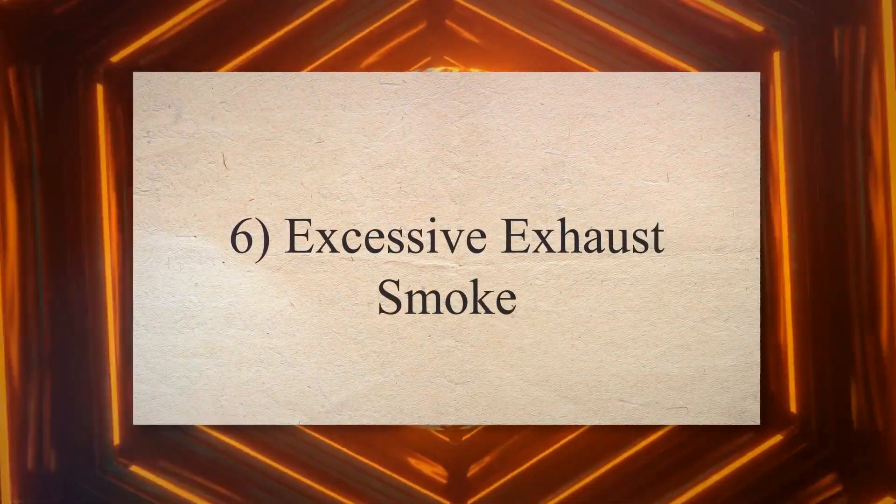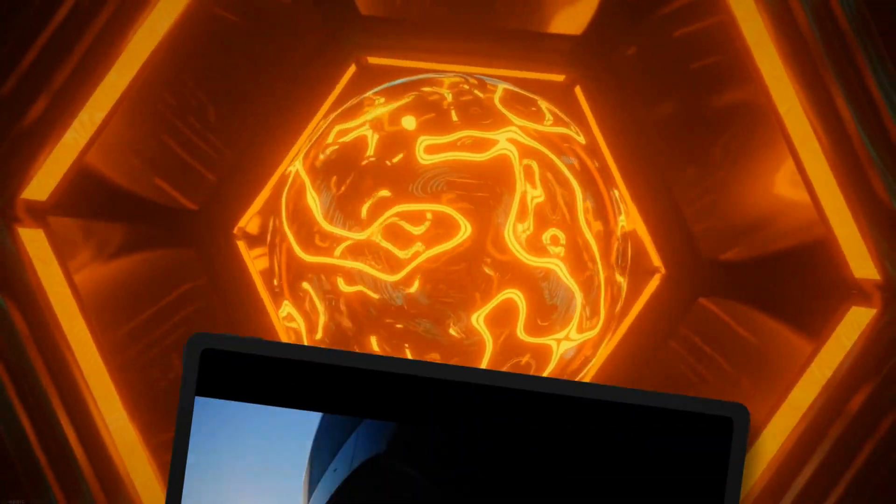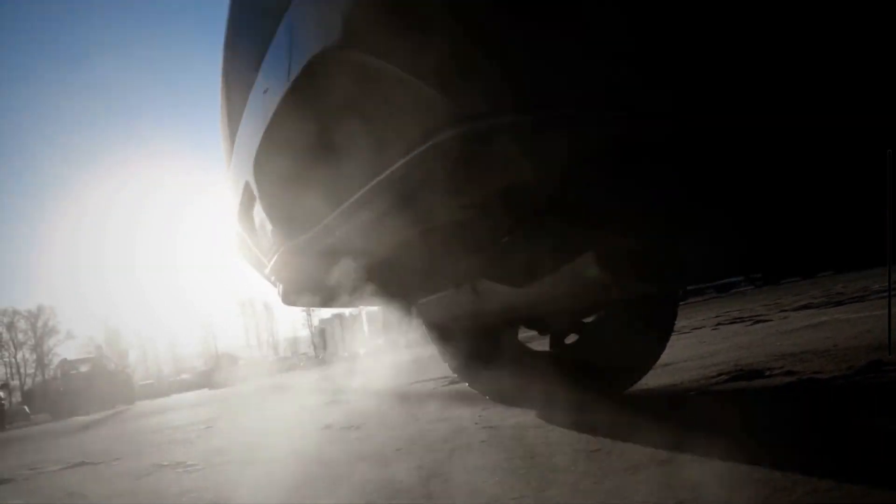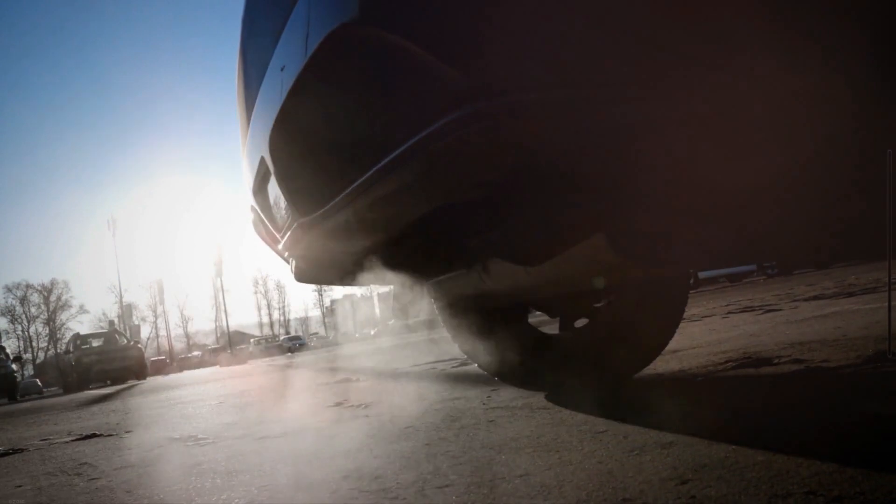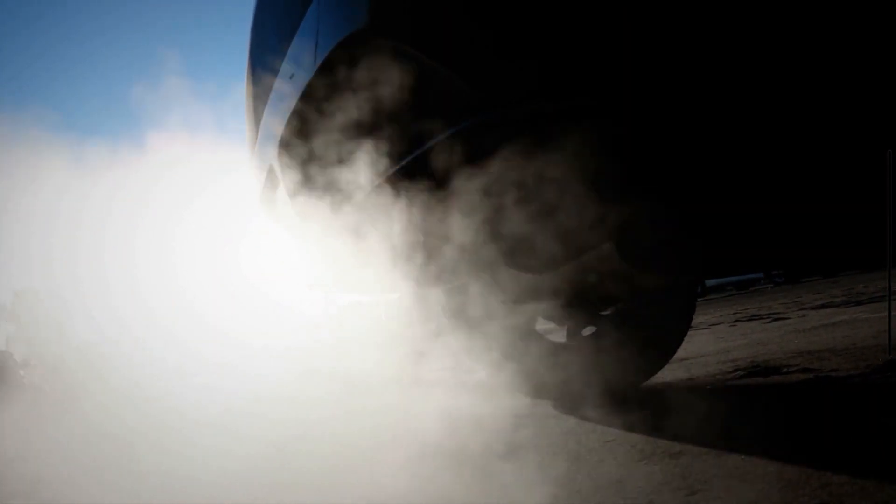6. Excessive exhaust smoke. If there is a lot of exhaust smoke coming out of your vehicle, this could be an easy sign that you have bad piston rings. This smoke will look very thick and have dark gray and blue colors to it. It is often accompanied by a burning oil smell.